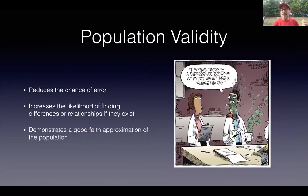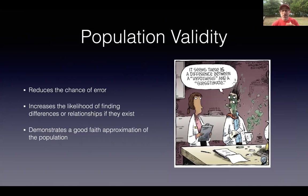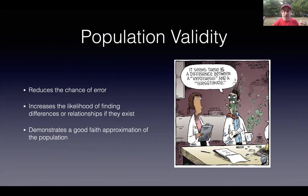When we have population validity, we have accurate results. Our results should be replicable. We should be able to find the results again and again. And this should be a good faith approximation of what we say is happening with the participants — not only the participants in our study, but with who they represent in the population of interest. So if I'm studying adolescents with mental illness, then this should be a good representation and an approximation of adolescents with mental illness.